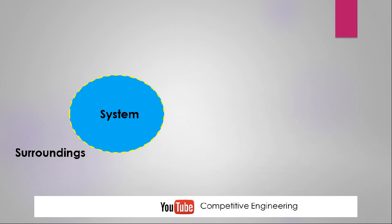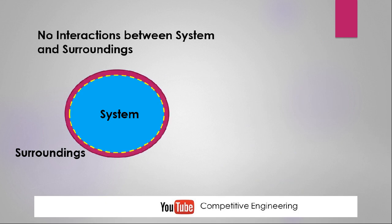The third kind of system is the isolated system. As the name indicates, it is completely isolated from the surroundings, which means there is no kind of interaction — neither mass nor energy — between the system and the surroundings. Mass cannot enter or leave the system, and energy cannot enter or leave the system.